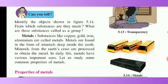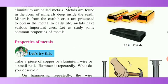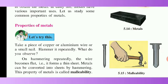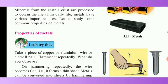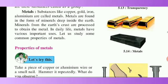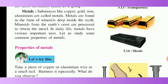Now we are going to learn the properties of metals. First, what is a metal? Substances like copper, gold, iron, and aluminum are called metals. Metals are found in the form of minerals deep inside the earth. Minerals from the earth's crust are processed to obtain metals. In daily life, metals have various important uses. Let us study some common properties of metals.